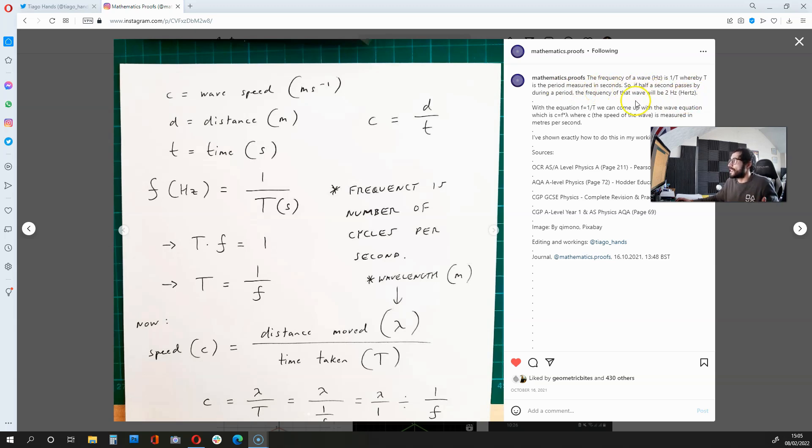So, if half a second passes by during a period, let's say, for instance, this t over here is a half, the frequency of that wave is going to be 2 hertz.